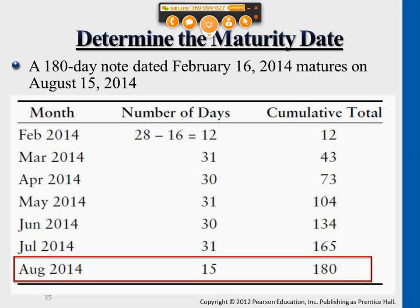The beginning day doesn't count — the 16th doesn't count. You just use 28 minus 16 to find the number of remaining days, then add on how many days there are in the following months. Accumulate to a point that is very close to 180, then figure out the exact date that gives you the 180th day. That will be the date the note matures — the due date of this note.